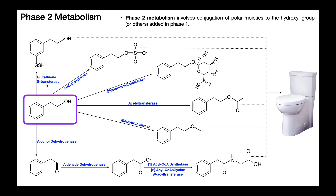Another reaction is glutathione S-transferase — glutathione, typically abbreviated GSH, is a very large polar group that can be attached directly onto the benzene ring, increasing the polarity of the molecule. Additionally, we can oxidize the alcohol into an aldehyde via an alcohol dehydrogenase, then the aldehyde into a carboxylic acid via aldehyde dehydrogenase. We can then conjugate that carboxylic acid to an amino acid like glycine — a two-step reaction using an acyl-CoA synthetase to activate the carboxyl, followed by acyl-CoA:glycine acyltransferase to conjugate glycine.